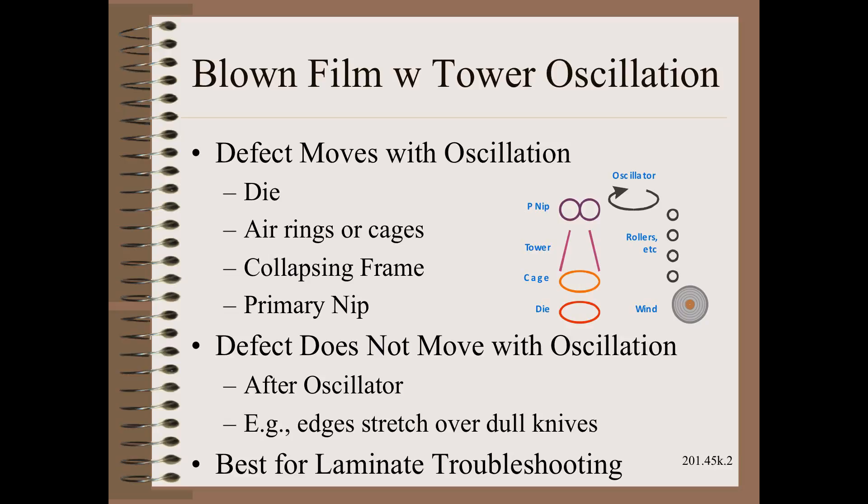Baggy webs is a defect where oscillating the die ring instead of a unit after the primary nip may help some with the buildup of gauge bands that could lead to baggy lanes. However, as we will see, current machine design practices fall short of achieving the ideal of a level roll.